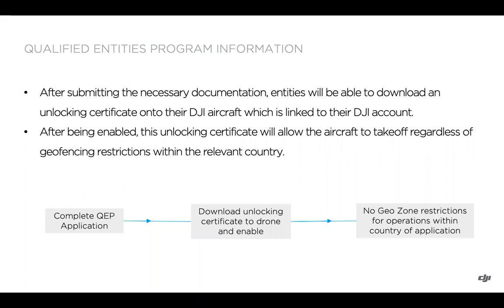You can see a little workflow here, a little different than the unlocking certificates we discussed earlier. Essentially, you want to: A, complete the QEP application; B, download the unlocking certificate to the drone and enable it. And then there are no geo zone restrictions for operations within the country of application. We'll be covering the QEP application in this video, and then in a later video you can see more details on downloading those unlocking certificates and enabling them.